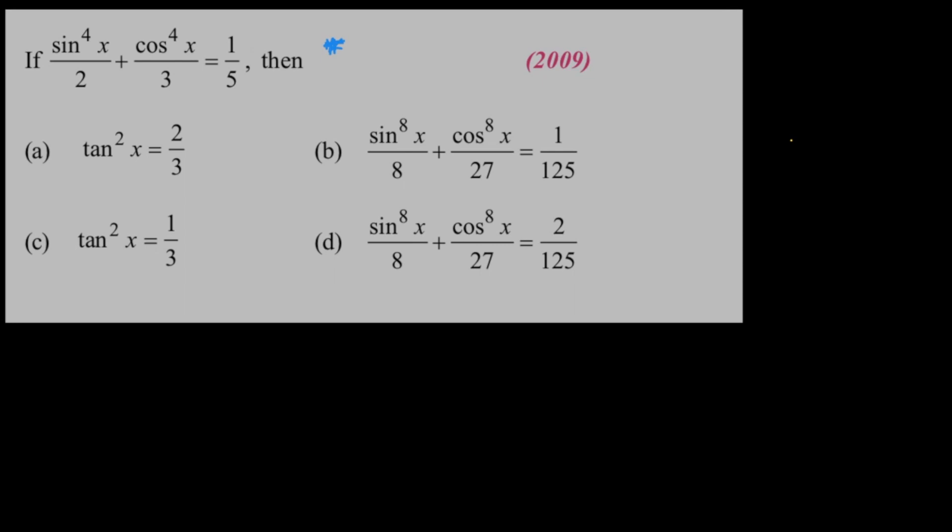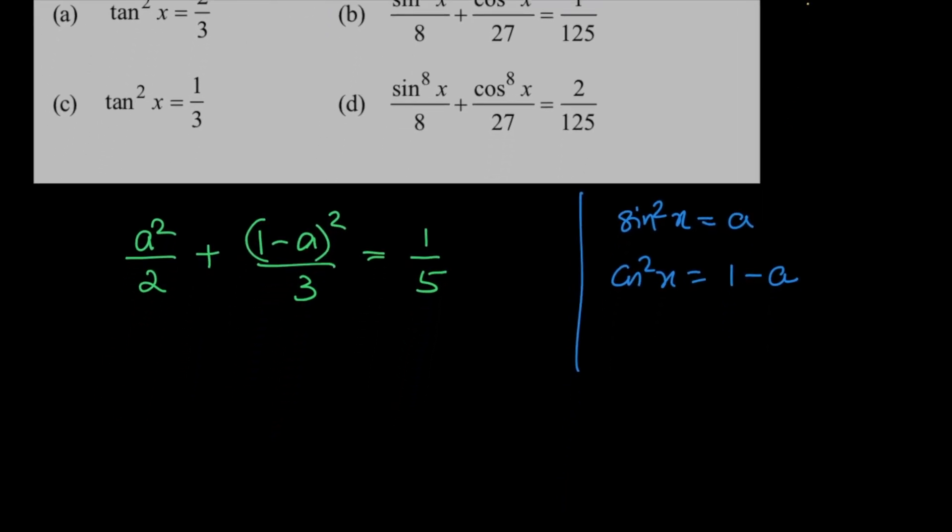So what I'm going to do is I'm going to substitute sin square x is equal to a just for the sake of simplification so that your cos square x becomes 1 minus a. What happens now? We have a square by 2 plus 1 minus a whole square by 3 is equal to 1 by 5.